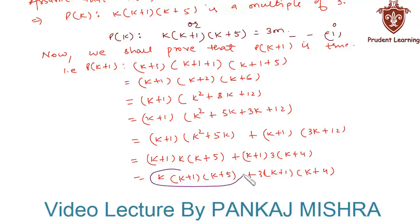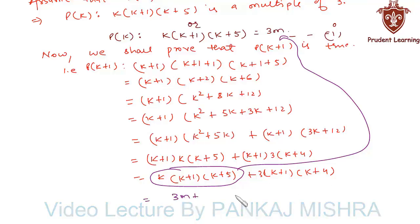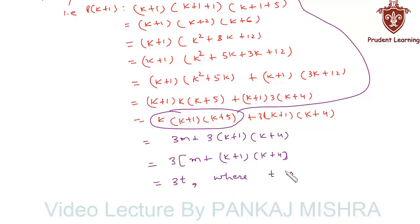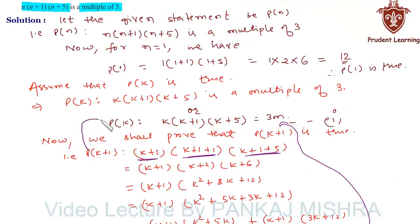We have the value of k(k+1)(k+5) from equation 1 as 3m, so substituting it we get 3m plus 3(k+1)(k+4). Taking 3 common from both terms gives 3 times [m + (k+1)(k+4)], which can be represented as 3t where t = m + (k+1)(k+4) is a natural number. Thus P(k+1) is true whenever P(k) is true. Hence, by the principle of mathematical induction, P(n) is true for all natural numbers n.